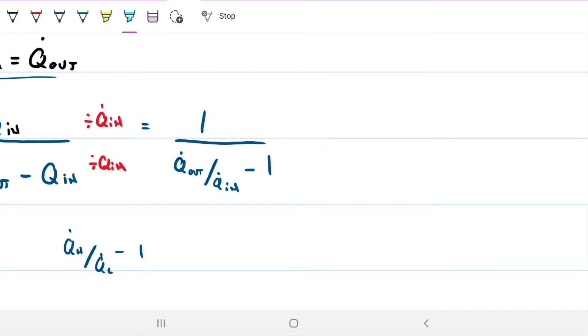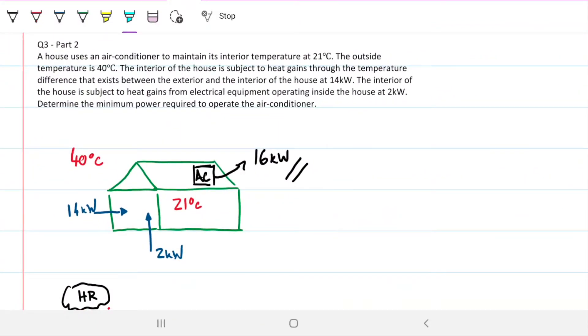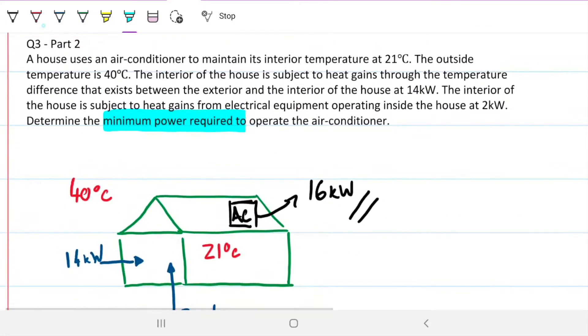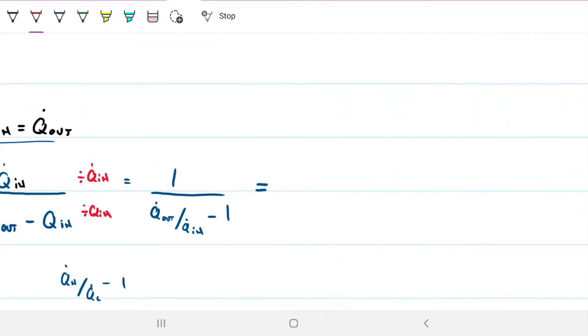And then we don't know these values just yet. But what we do know is that the question is asking us for the minimum amount. Let's go back and look at that. Determine the minimum power required. So what does that imply? If it's a minimum power required, it means that the minimum we need to put needs to disregard any irreversibilities. So no irreversibilities. And what does that mean? Well, this means that we're talking about an isentropic process. So if reversible, then delta S is zero. So in other words, S_gen, the entropy generated, S_gen is zero. We're not generating any entropy. We're doing a completely reversible process.